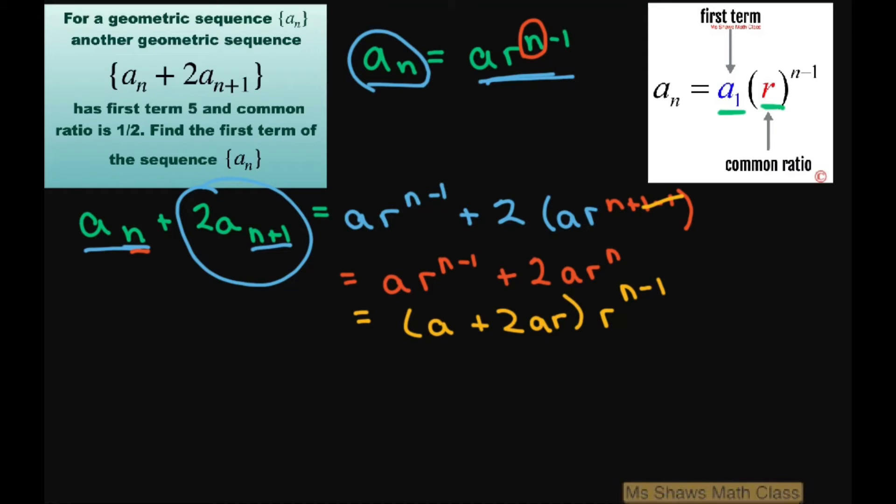The first term and common ratio of this sequence is going to be given here. So we're going to have the first term a plus 2ar times r, and the first term is 1 minus 1, so that's to the 0 power. Anything to the 0 power is 1. So you're going to get a plus 2ar.